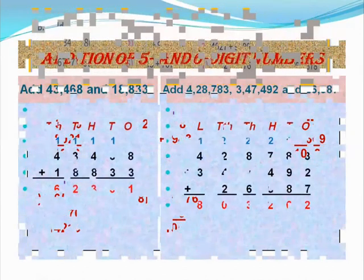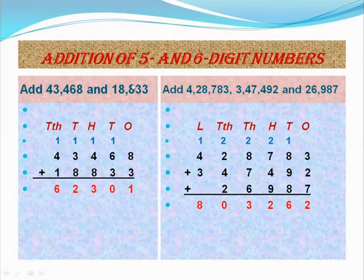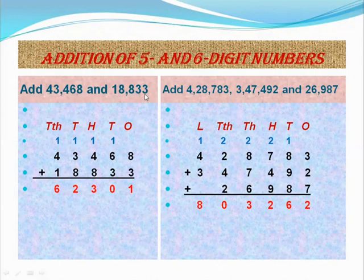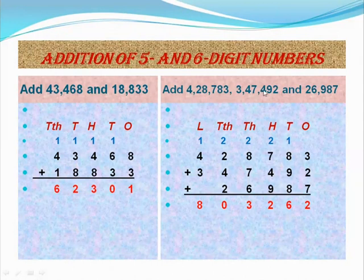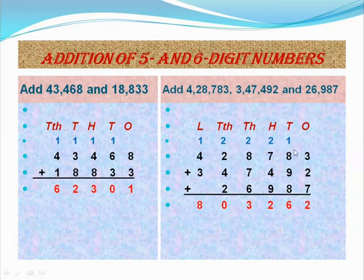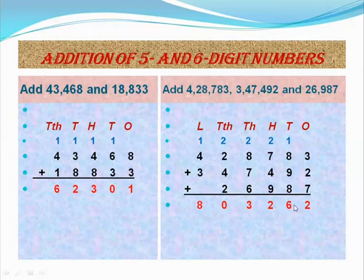Next, addition of 5 and 6-digit numbers — same method. Example: add 43,468 and 18,833. Write the numbers one below the other and add — answer equals 62,301. Second example: add 4,28,783 and 3,47,492 and 26,987. Write the numbers one below the other and add ones, tens, hundreds, thousands, ten-thousands, and lakhs places. The answer equals 8,03,262. This is addition of 5 and 6-digit numbers.